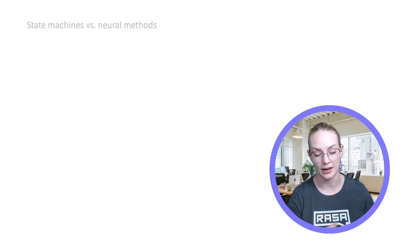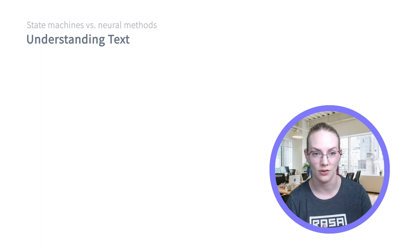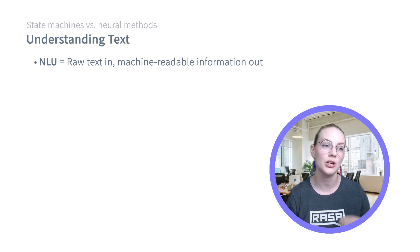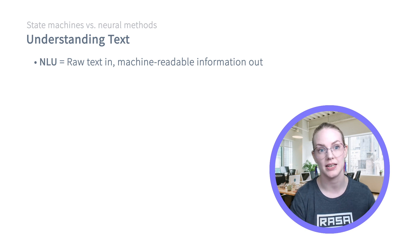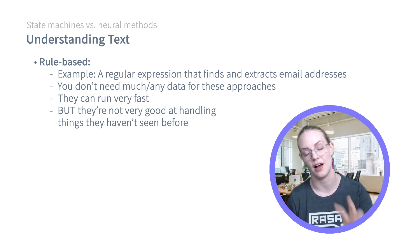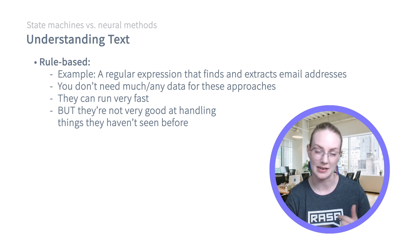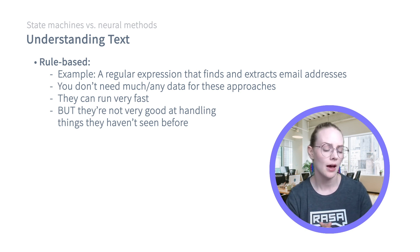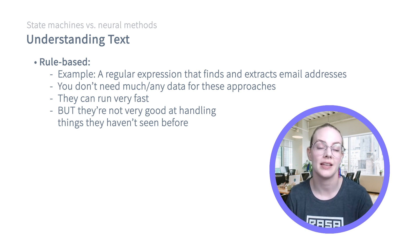There are two main parts to a Raza assistant, or any task-based dialogue system. The first is understanding the text — this task is often called natural language understanding. You have raw text in from a human, and what you get out is machine-readable information: some sort of feature extraction or representation of what's in the text. The two methods used are rule-based — things like regular expressions that find and extract email addresses, which have a very predictable structure. Rule-based approaches don't require much data, tend to be fast and lightweight, but they can't handle things they haven't seen before.